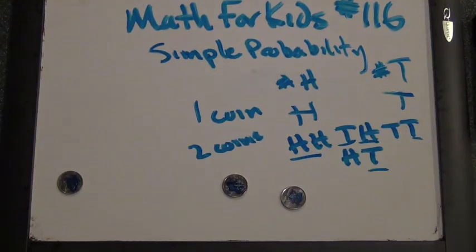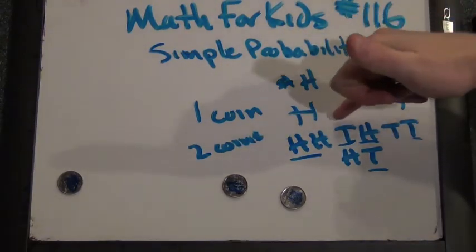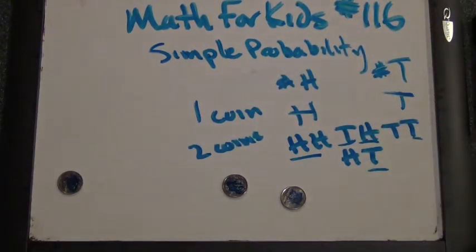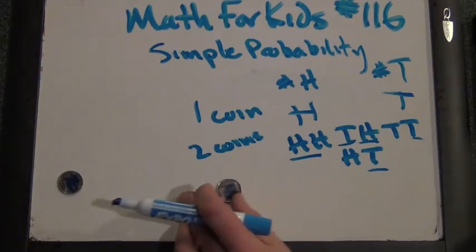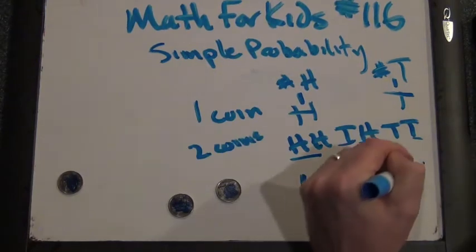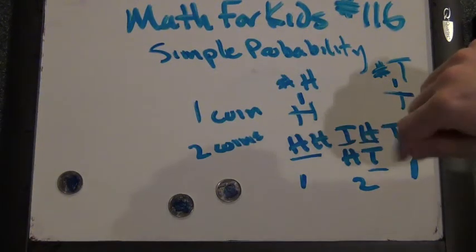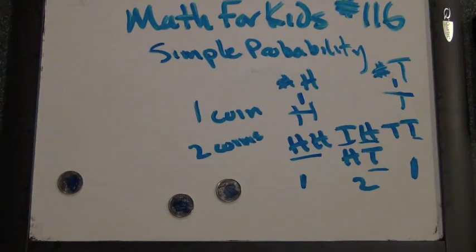This is interesting. There seem to be two ways that you can get one tail and one head. So before we had one, one. Now we have one, two, one. Does one, two, one look familiar? Powers of eleven, eleven squared. Where else did you see one, two, one? Pascal's triangle. Comes from Pascal's triangle.